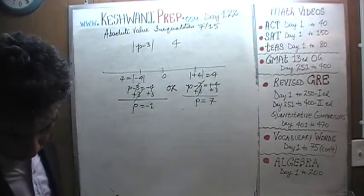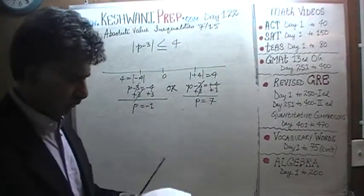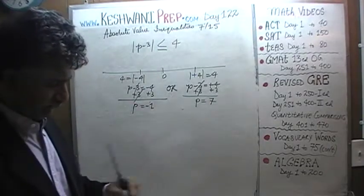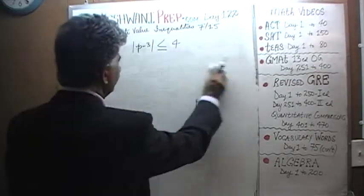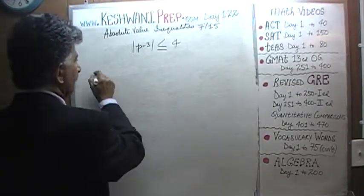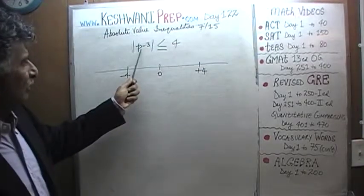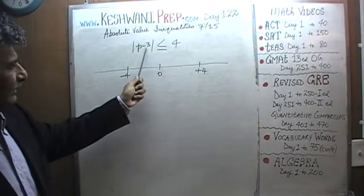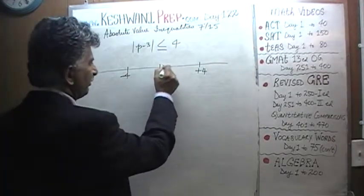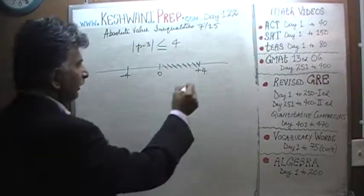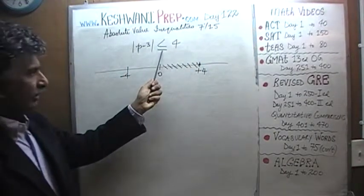What are we told? Less than or equal to 4. So let's do that part now — it has to be less than or equal to 4. Here is our positive 4 and here is our negative 4. Where is the absolute value of P minus 3 going to be less than 4? On the positive side it is simple: the value of P minus 3 is going to be less than or equal to 4 when P minus 3 is between 0 and 4. Including 4 or not? Including 4, because it is less than or equal to — so we use a closed circle.